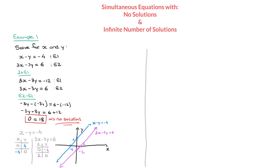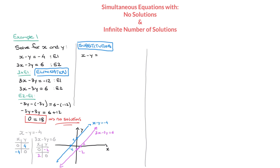Now let me show what the mathematical contradiction looks like when using substitution instead of elimination. Starting from the same equations — x minus y equals negative 4 (e1) and 3x minus 3y equals 6 (e2) — I use the first equation to make x the subject. Rearranging e1 by adding y to both sides gives x equals y minus 4.